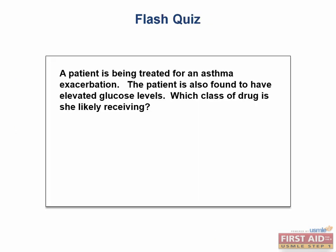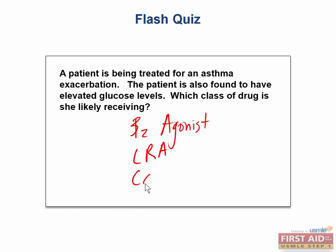Let's take a moment and do a practice question. A patient is being treated for an asthma exacerbation and is also found to have elevated glucose levels. Which class of drug is the patient likely receiving? To figure this out, let's think of a few common asthma drugs. She could be taking a beta-2 agonist such as albuterol, a leukotriene receptor antagonist such as montelukast, or a corticosteroid.